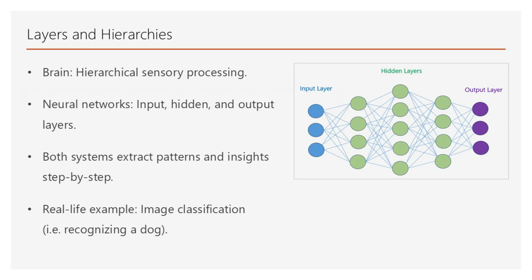For example, in the case of image classification, and more specifically recognizing a dog, our brain identifies shapes, fur patterns, and movement, concluding it's a dog. Similarly, a neural network processes pixel data, detects edges, and finally classifies the image as a dog.